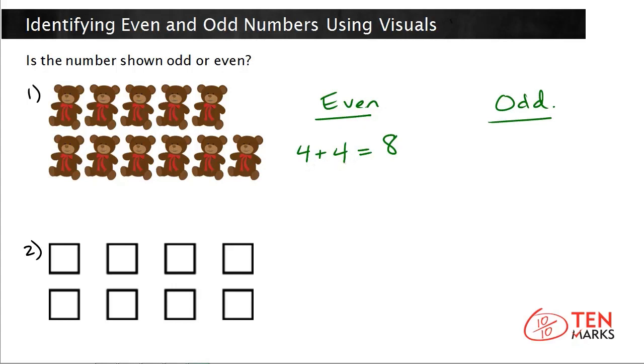This is called a doubles fact and if a number can be written as a doubles fact then the number is even. And again, remember even numbers can be split into two equal groups so you can think of 4 plus 4 as two groups of 4, and 4 is equal to itself. Now let's talk about an odd number.